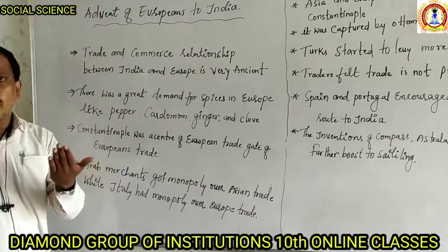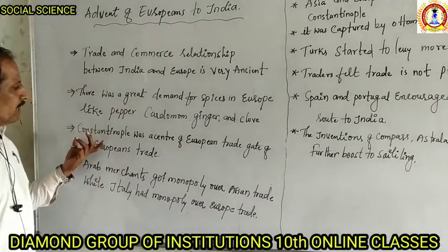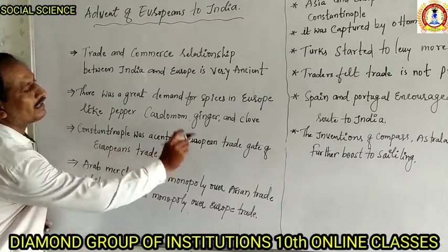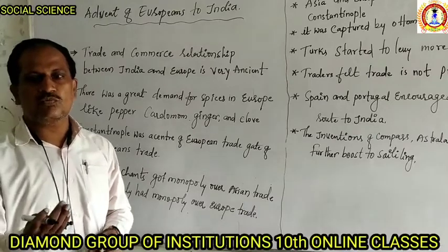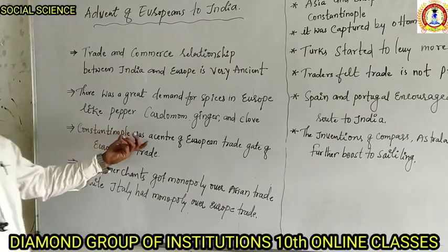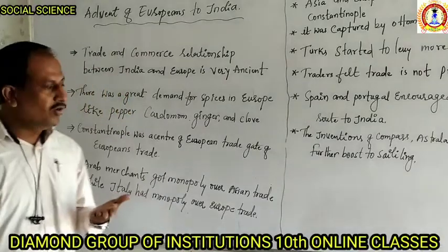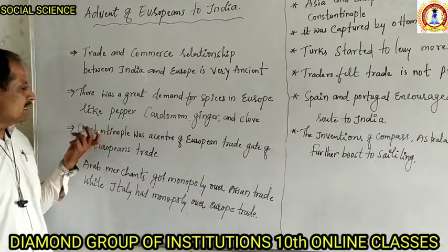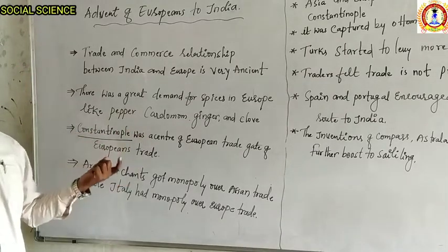Now, from where were they getting these spices? At that time, one important marketing place they chose was Constantinople, which became the center of European trade and the gateway for Europeans to take spices from eastern countries towards Europe. Constantinople was located in Turkey, or what we call the Arab countries.